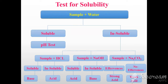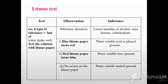After performing the solubility test, if the compound is soluble in water, perform the litmus test. Take 0.1 gram of the substance, add 3 ml of water in a test tube, mix well, and test the solution with litmus paper. If the substance dissolves, lower members of alcohols, esters, ketones, or carbohydrates may be present. If blue litmus paper turns red, a water-soluble acid or phenol may be present. If red litmus turns blue, a water-soluble base is present. If there is no action on litmus paper, a water-soluble neutral compound is present.